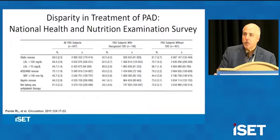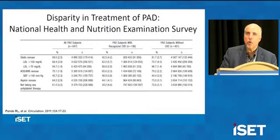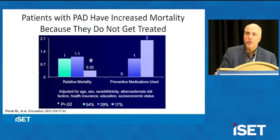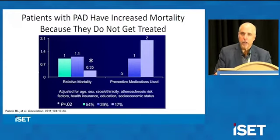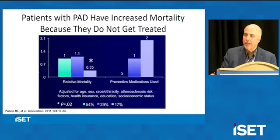I'd like to cover some of the disparities found in patients with PAD. This is really quite sobering. The National Health and Nutrition Examination Survey looked at patients with PAD versus those without, examining the use of statins, ACE inhibitors, and antiplatelet therapy. The reduction in appropriate medical therapies offered to these patients with PAD is really dramatic. I would suggest that one reason these patients have shortened survival is because they are not effectively treated with antiplatelet therapy, antihypertensive therapy, statins, tobacco cessation, and tight glycemic control.